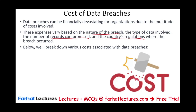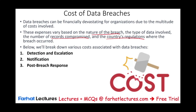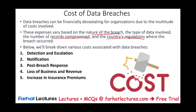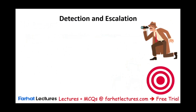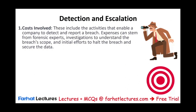We're going to break down those costs into seven different categories: detection and escalation, notification, post-breach response, loss of business and revenue, increase in insurance premium, intellectual property loss, and reputation loss. Starting with detection and escalation — these costs include activities that enable a company to detect and report the breach, and that costs money.